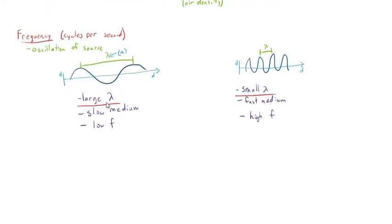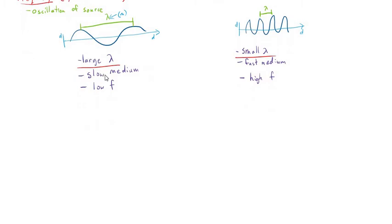So anyway, these associations, that a large wavelength goes with either a slow medium or a low frequency, and a small wavelength goes with either a fast medium or a high frequency, this forms the basis for the universal wave equation.